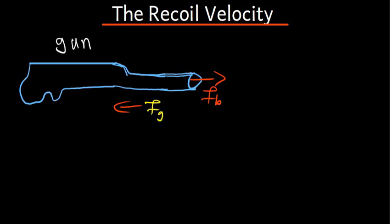In this tutorial we are going to talk about the recoil velocity. So what is the recoil velocity? I've got a gun here. Once you shoot the gun, we're going to have the bullet going in this direction, so we are going to have the velocity of the bullet. At the same time, if we remember Newton's third law — for every action there is an equal but opposite reaction — the force which we are going to use to shoot the bullet is going to be the same as the force which the gun is going to use to push you backward.